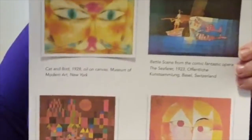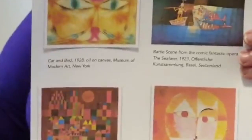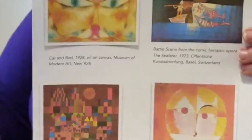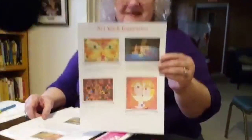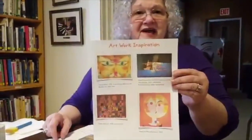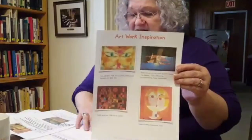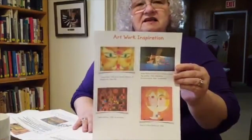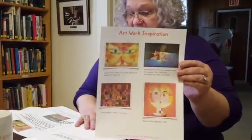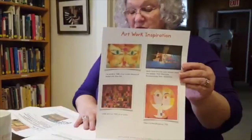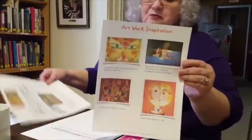Klee had difficulty to begin with color. And in the early 1900s, he went to North Africa and the light there was extremely intense and it made colors glow. After that, he decided he would no longer have difficulty with colors. As a matter of fact, he said in some of his writings later: 'Color has taken possession of me. No longer do I have to chase after it. Color and I are one. I am a painter.'